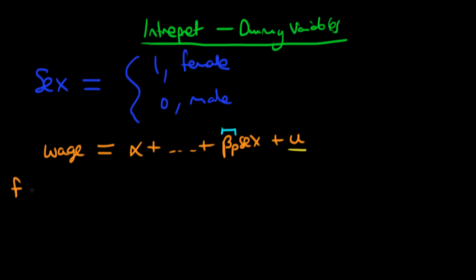Well, the interpretation is quite easy if we think about what wages would be if an individual was female. It would be equal to α plus a whole host of independent variables. And our sex variable would take on a value of one, so we'd just be left with β_p, because our error here on average would be zero. Okay, so that's the average wage which a female might command.